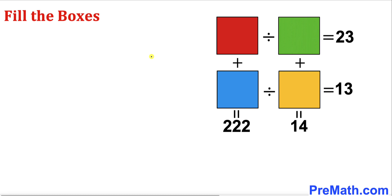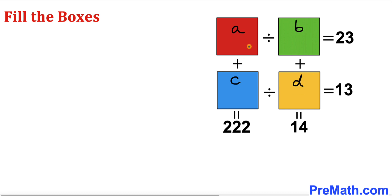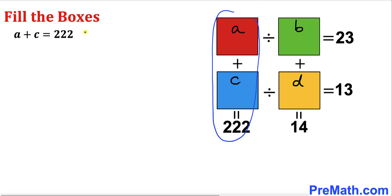Here's our very first step. Let's go ahead and label these boxes. I'll label this red box as A, this green box as B, this blue box as C, and this orange box as D.